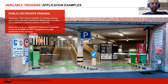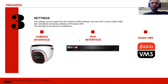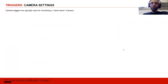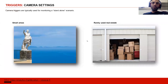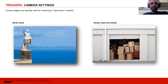Now we'll go into the settings — how to set it up. We have three platforms: IPC directly, the NVR interface, and the OSEA VMS. Cameras we will use for small areas that don't need many cameras. For example, if we want to monitor a statue where one camera is enough and there's only one access path, we can set that statue as a sterile area so if anyone climbs on it or tries to tamper with it, we get a notification from the camera directly.